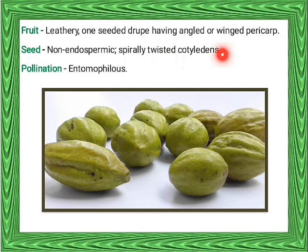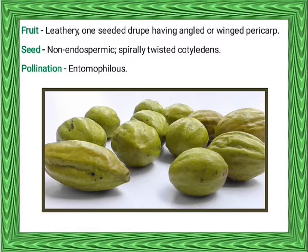Here we can see the Terminalia chebula fruits. This image shows the angled fruit. The fruit is in LS (longitudinal section). The endocarp portion is hard and it is a one-seeded drupe. The endocarp is winged.